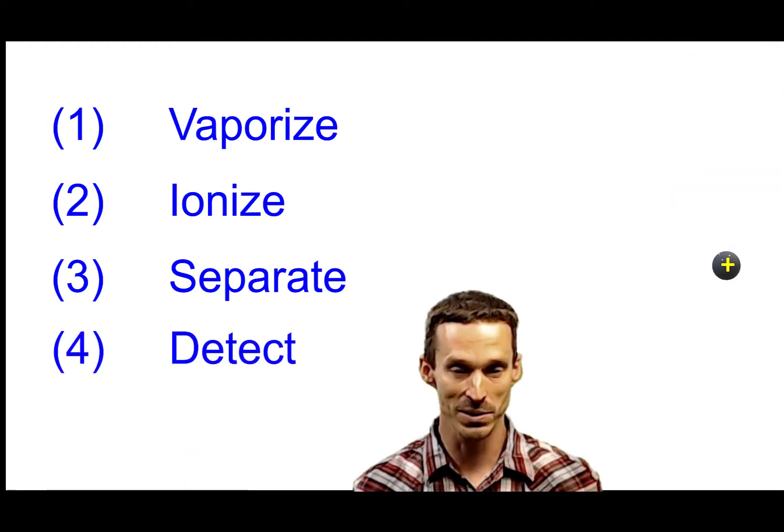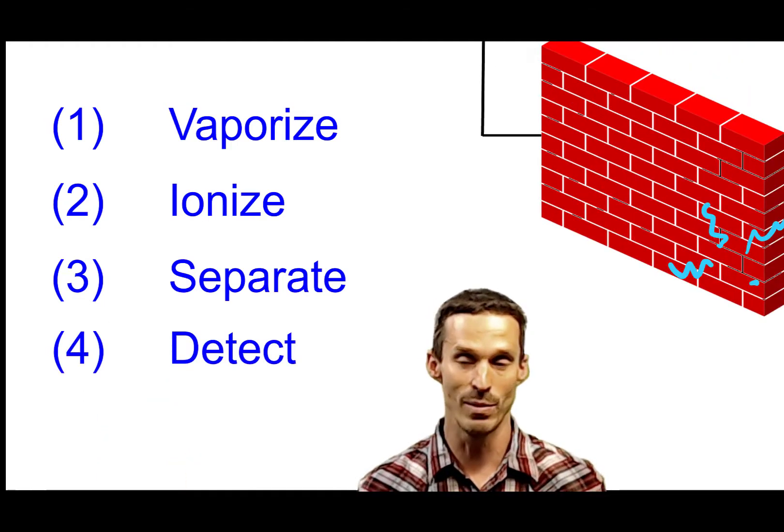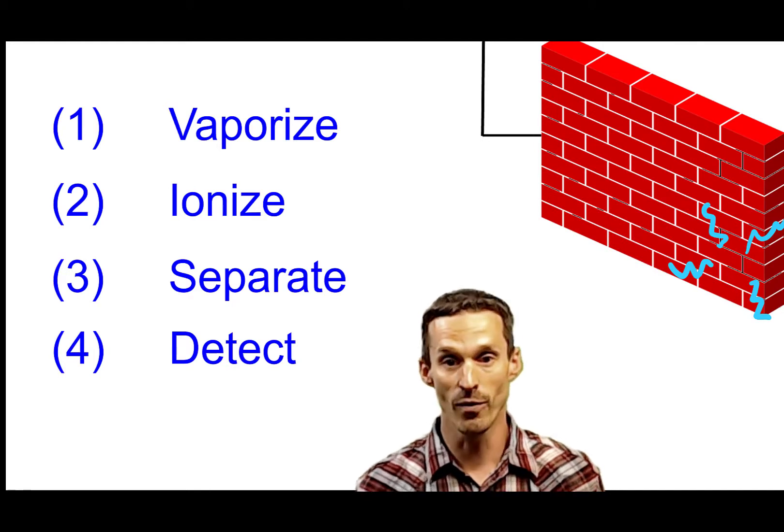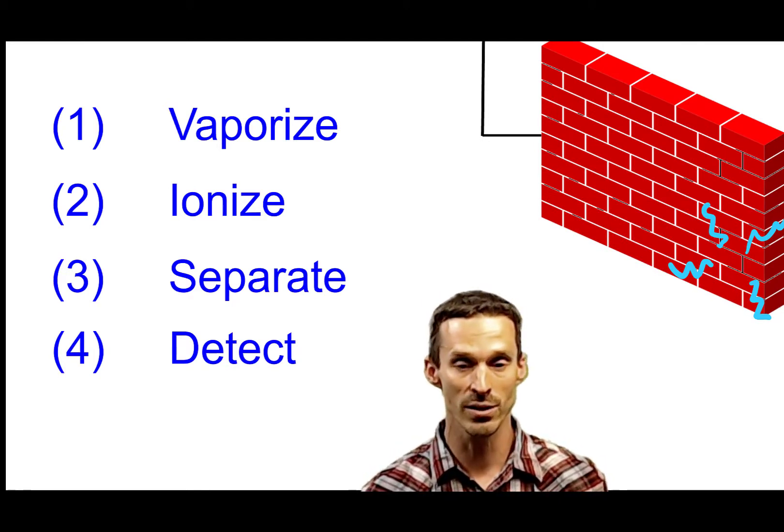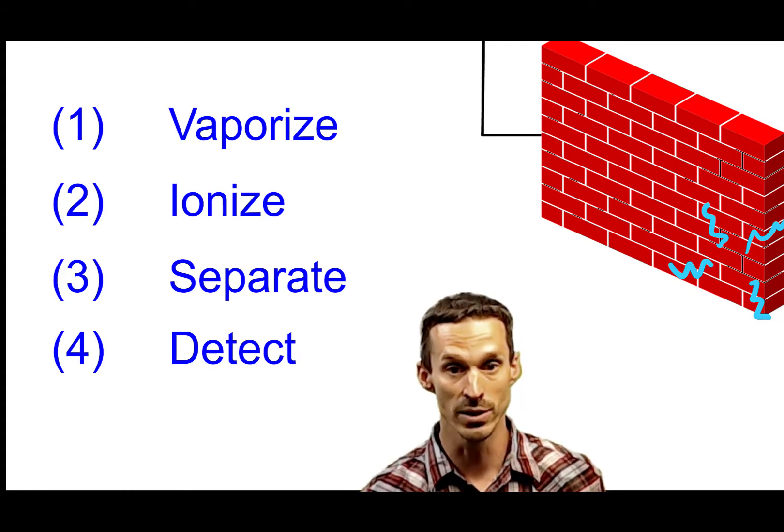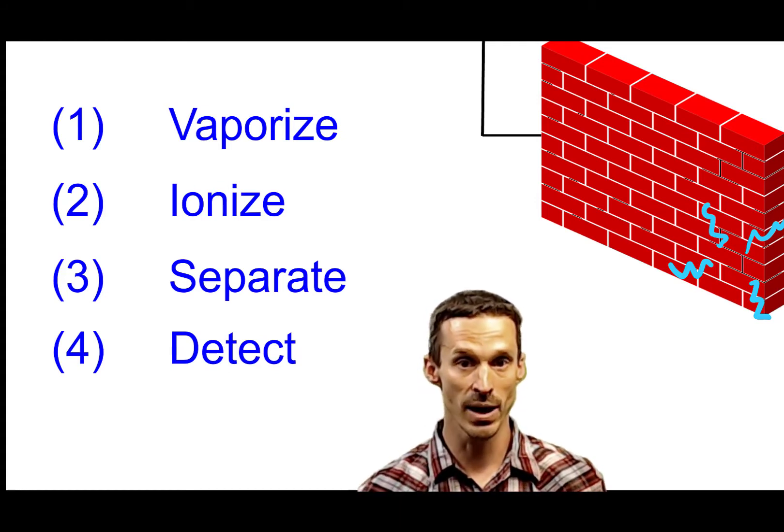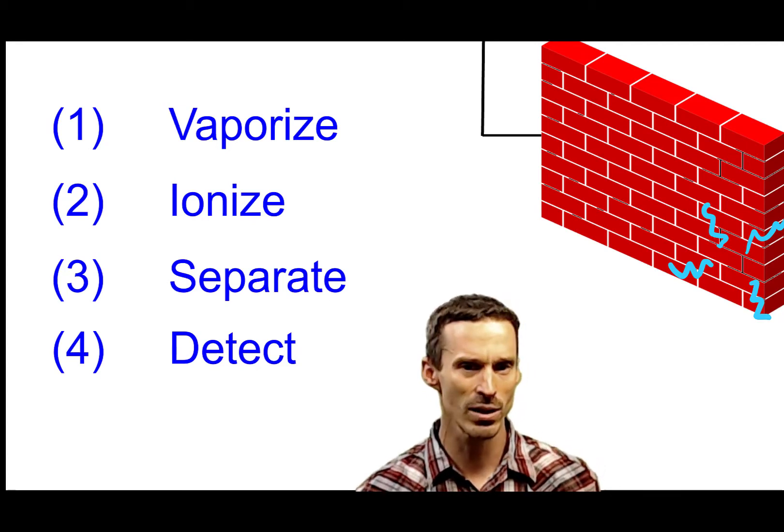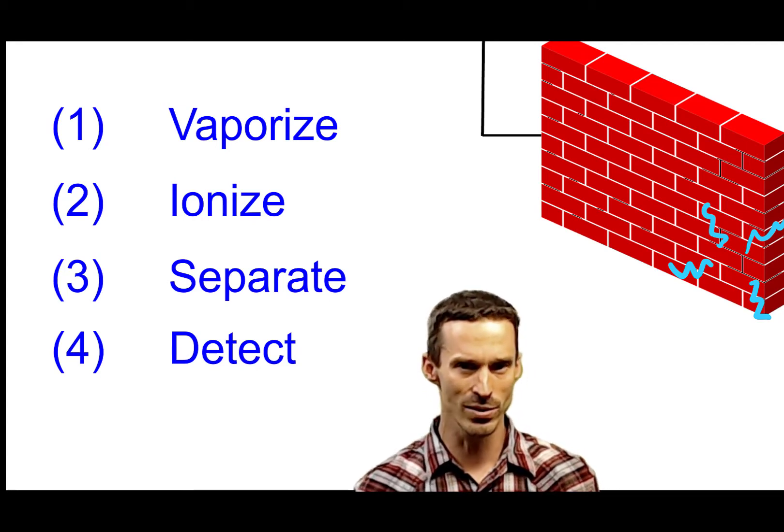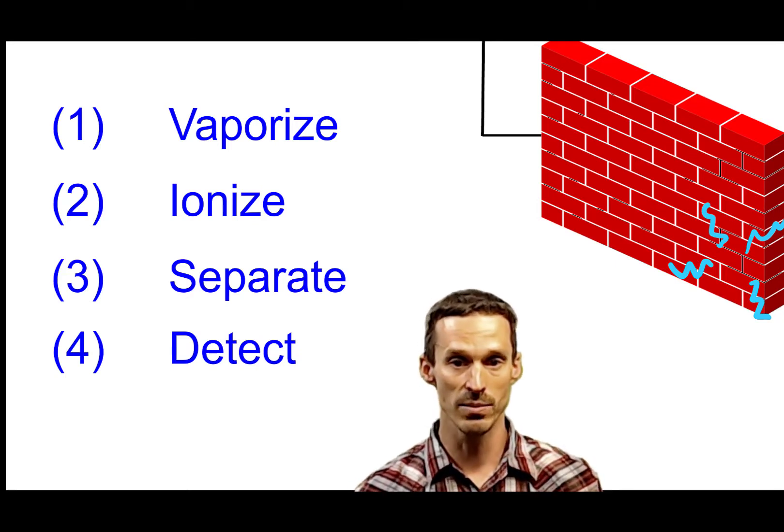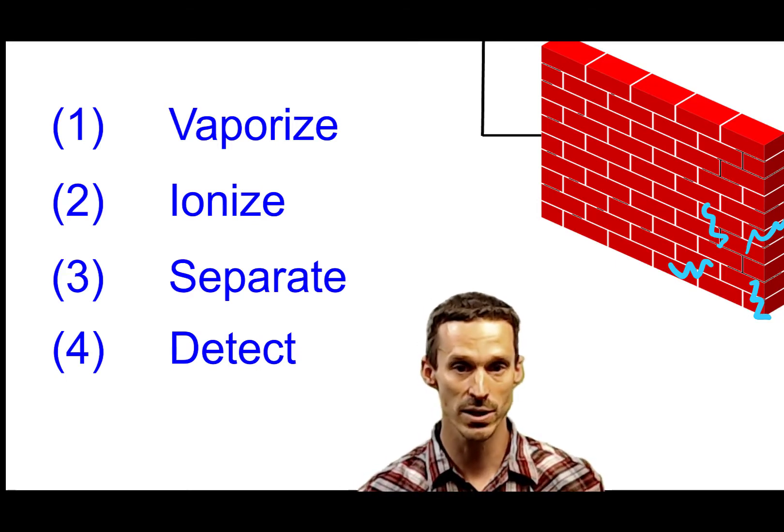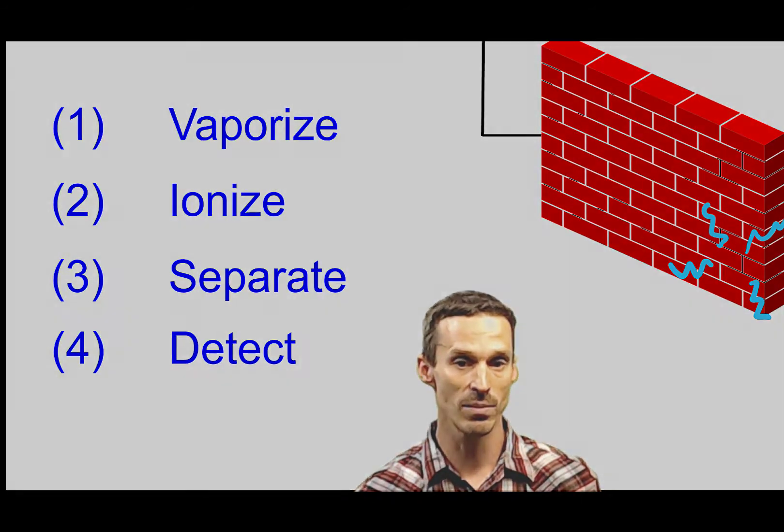And lastly, we need to be able to detect our compounds. So let's just imagine that they've hit some type of a wall. And then that collision of charge with the surface allows us to cause a measure in the current. The order of these steps does not matter at all. And in fact, sometimes you can't really separate the steps. In other words, step one and two might happen together. Step three and four might happen at the same time. But mass spectrometry does always involve these four steps in some different way.